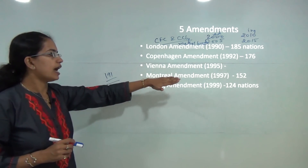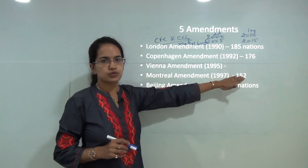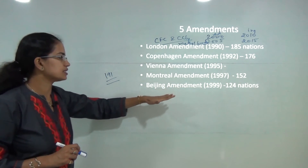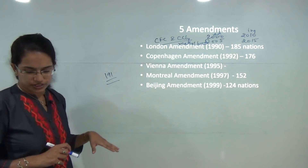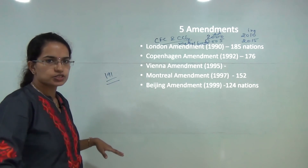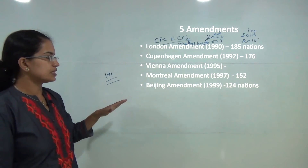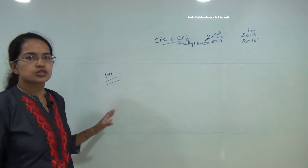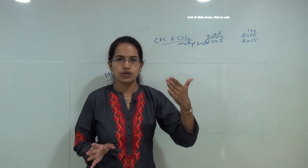The Montreal Amendment proposed the phaseout of methyl bromide by 2005 in developed nations and 2015 in developing nations. The Beijing Amendment talked about hydrochlorofluorocarbons (HCFCs) being phased out by 2014 in both developed and developing nations.